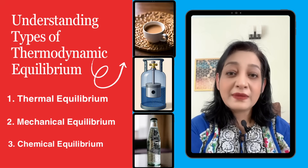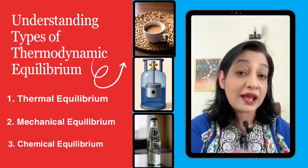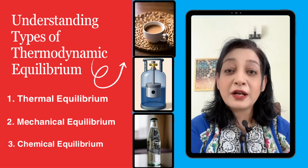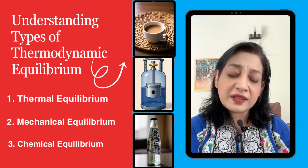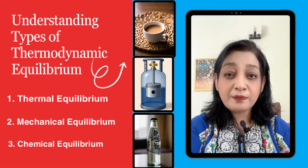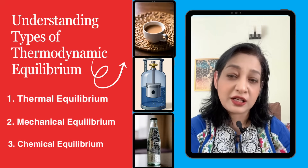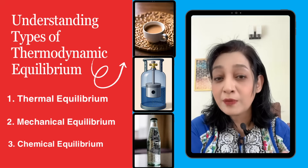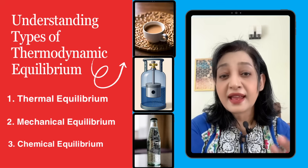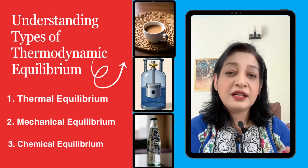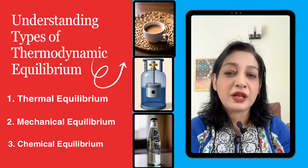For example, a cup of tea left on the table eventually becomes the same temperature as the room. Number two is mechanical equilibrium: no unbalanced forces are acting on the system. Pressure remains constant, with no volume change due to pressure differences or movement of pistons or boundaries. For example, gas inside a cylinder with a piston that is not moving — pressure inside equals pressure outside.